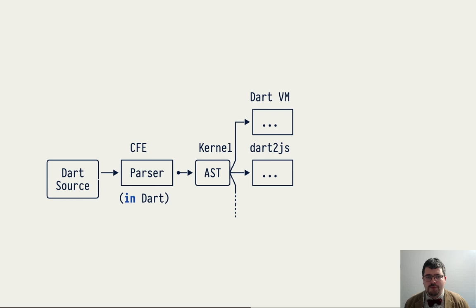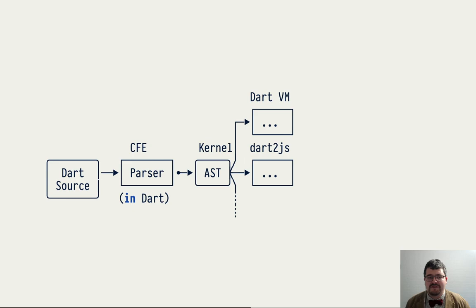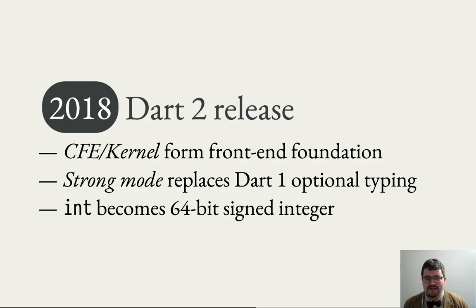So we started a project to address it. We created a common front-end (CFE) that incorporates a canonical way of parsing Dart into a canonical AST representation — the kernel. This CFE and kernel came with type checking rules, desugaring rules, and so on. Back-ends like Dart VM, Dart2JS, or the Dart Development Compiler would consume this representation and emit whatever they want — be it native code, JavaScript, or something else. This multi-year effort culminated in the Dart 2 release in 2018, where we made two major shifts: we shifted to a common front-end foundation for our tools in the form of CFE and kernel.